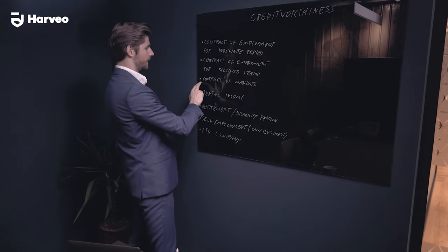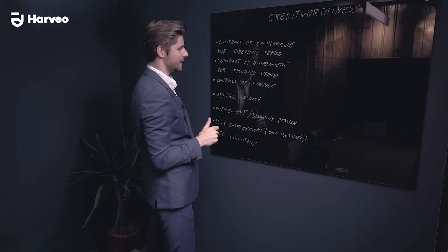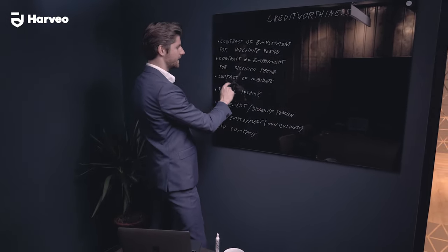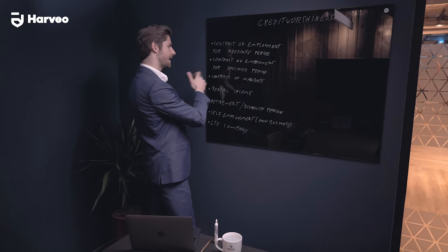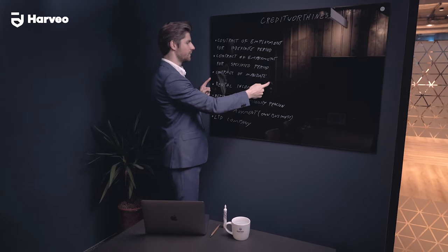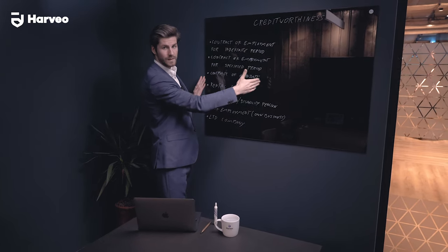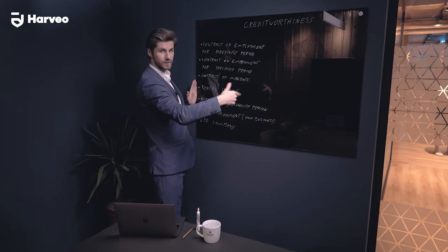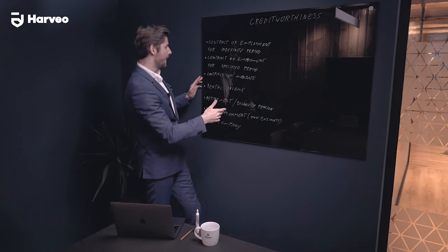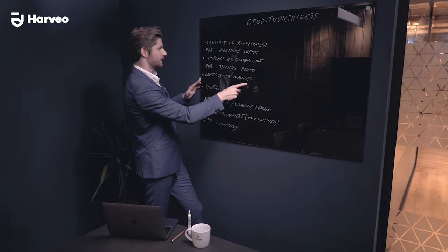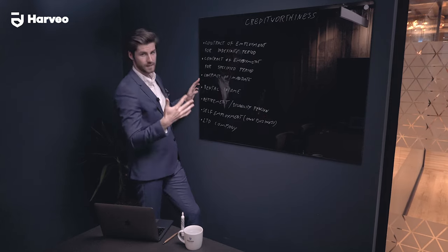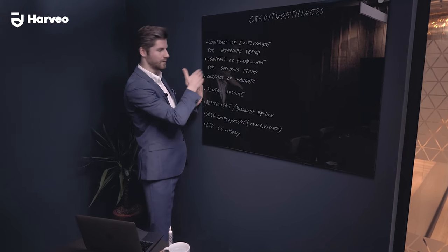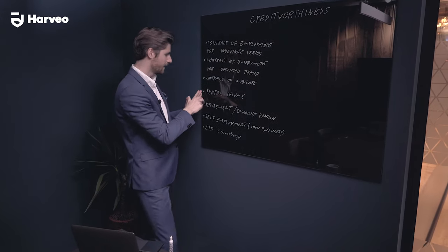That's the difference. For a contract of mandate — if you're a student or a programmer working month to month on a project — we take six or even 12 months back. Usually you need to prove employment for 12-plus months with no gaps longer than 60 days between salary transfers to your account. We'll generally take the last six months, but at least 12 months of history is preferred.